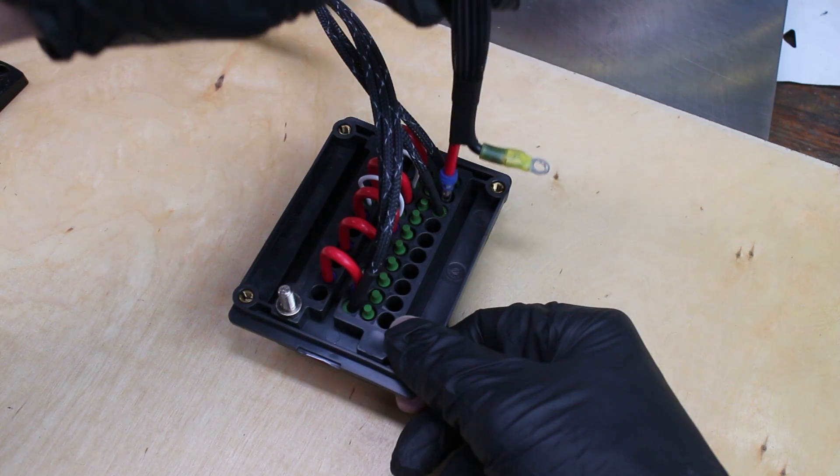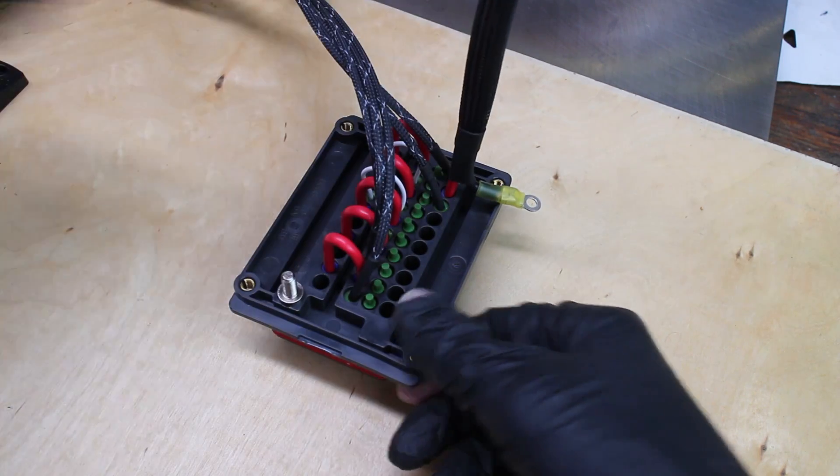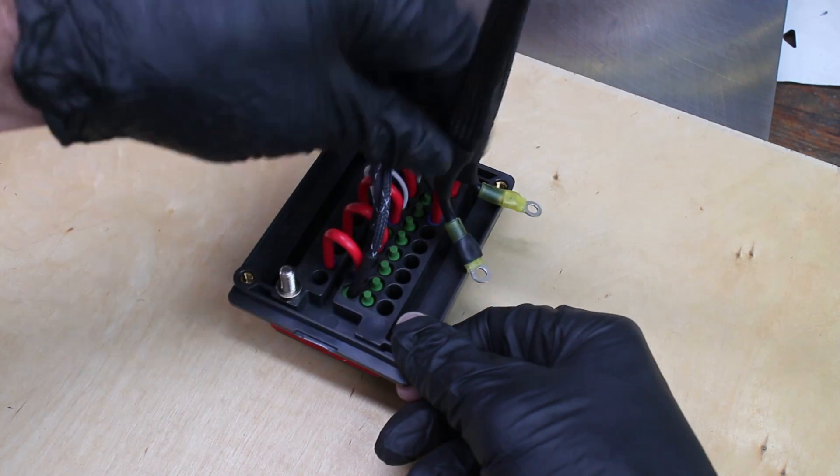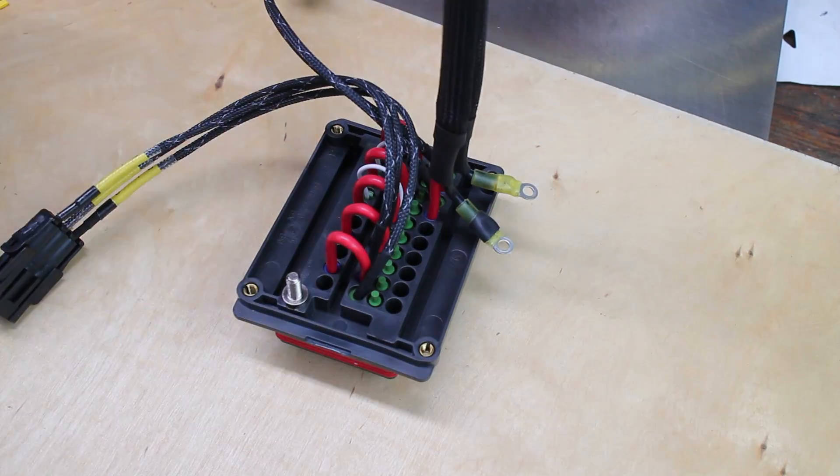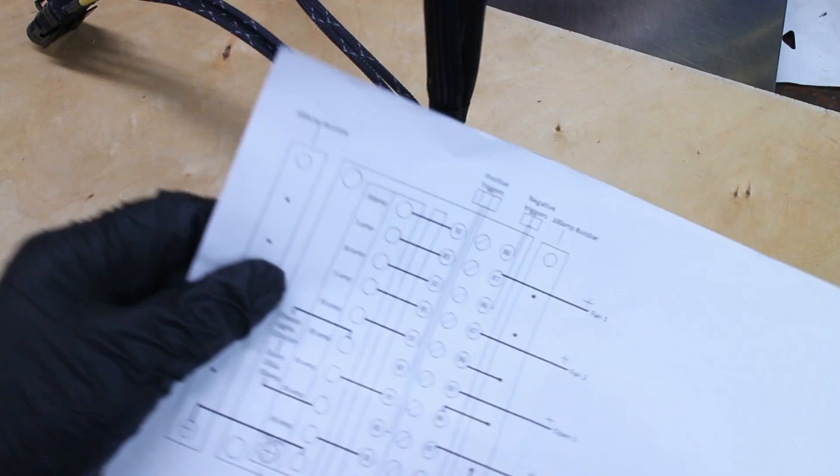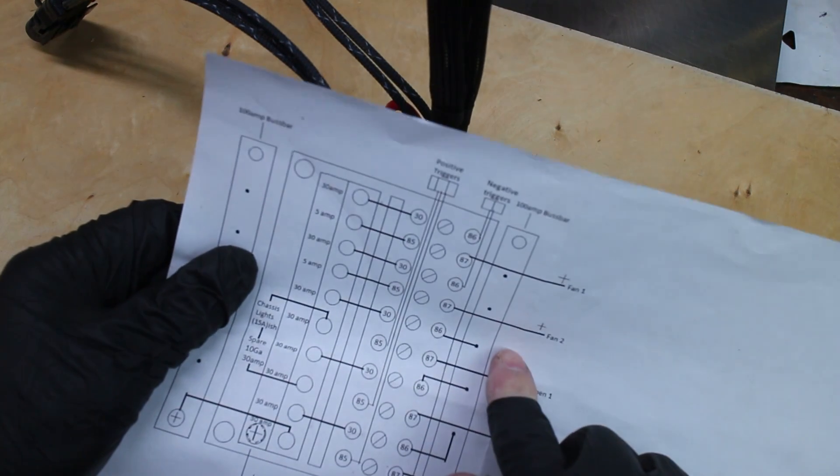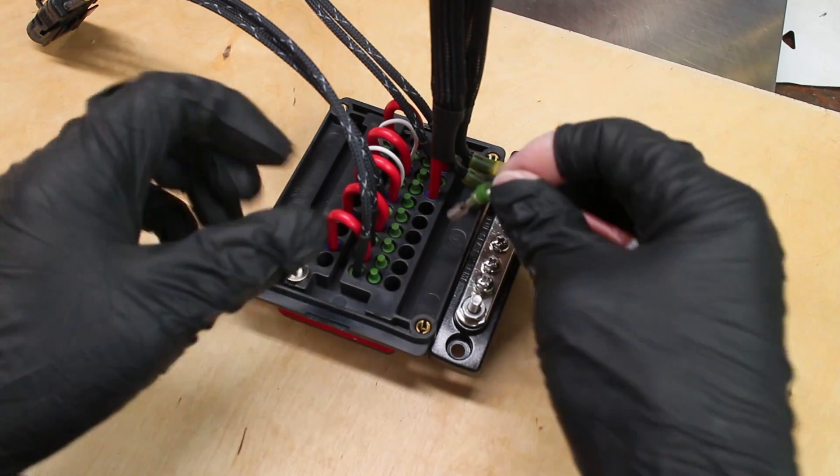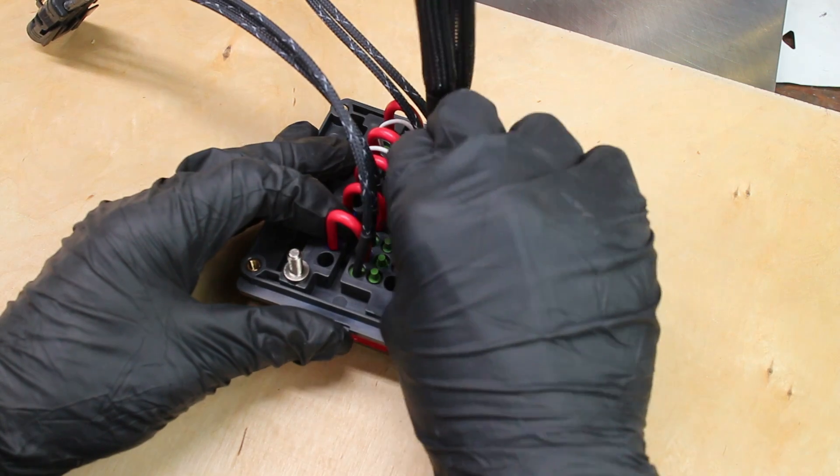This positive wire goes into the fuse box. Then the ground is connected via this bus bar. So the bottom 3 relays have positive trigger wires, so they're going to need a ground. A small 18-gauge wire is used, simply connecting the relay to the grounding bus bar.